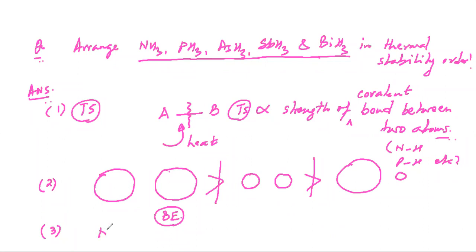If you talk about phosphine PH3, phosphorus and hydrogen's sizes are not comparable. So whose bond energy will be more - ammonia or phosphine?